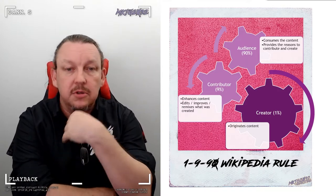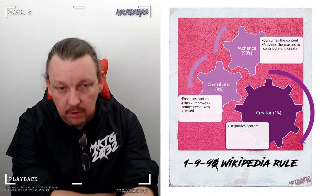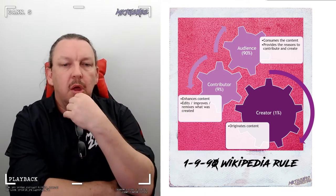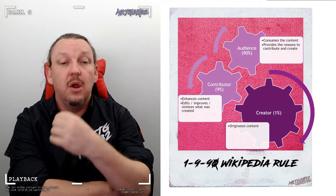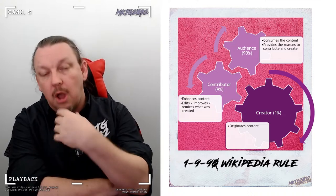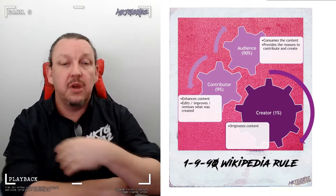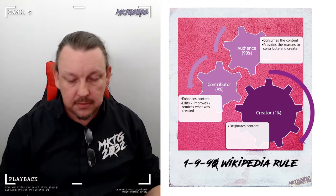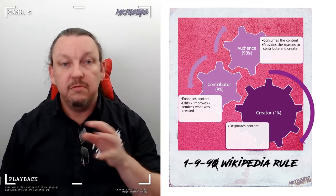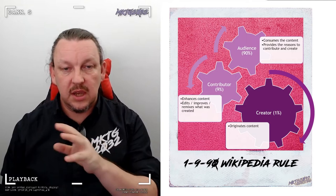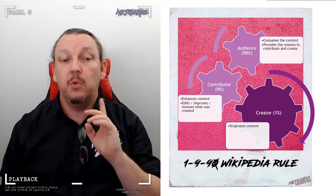The next idea is the 1-9-90 rule. This came from Wikipedia and is a rough rule of thumb, up there with the Pareto 80-20. The rough rule is: 1% of the user base creates content, 9% of the user base creates through editing - co-creation of value through improving what the 1% originates - and 90% of the user base is what we call the audience. So 1% is the creator, 9% is the contributor, and 90% are the people for whom the 1% creates.